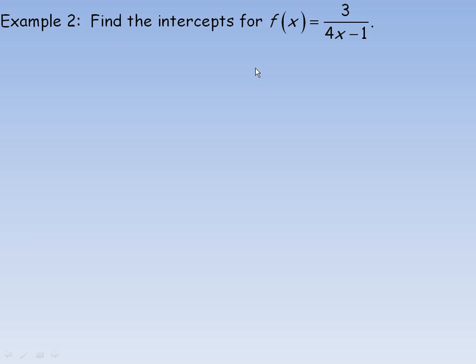In example 2, we're asked to find the intercepts for this function. f of x equals 3 over 4x minus 1 is our function. To find the intercepts, the x-intercept, we set the function equal to 0. The x-intercept is found where the y, or function value, is equal to 0.